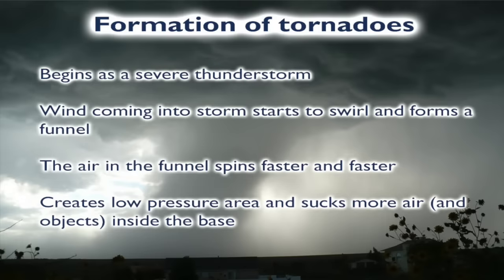The formation of tornadoes occurs when they begin as severe thunderstorms, and then wind coming into that storm starts to swirl and forms a funnel. The air in the funnel spins faster and faster and creates this low-pressure area, and then sucks more air and objects inside the tornado, bringing them up through the funnel itself and then dropping them down.